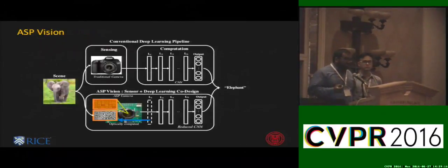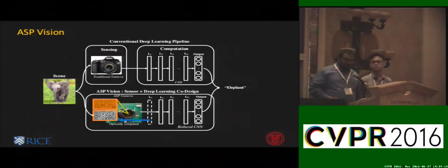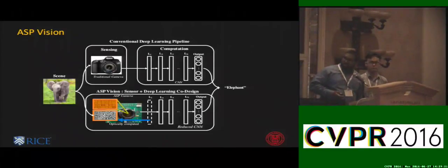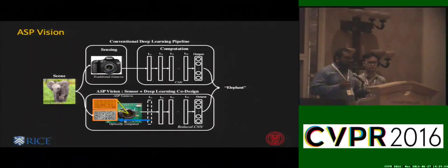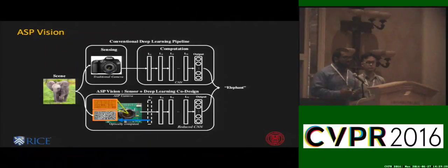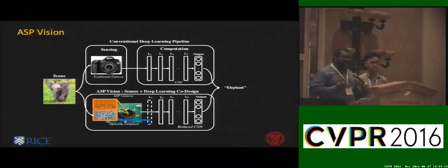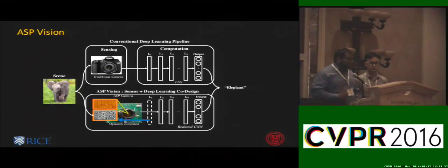So what is ASP Vision? In a conventional deep learning pipeline, the sensing stage is a separate block from the computation stage. Cameras are designed to take high-quality 2D images, not necessarily to provide the best features for convolutional neural networks, and the two units are usually designed separately — though that's starting to change.